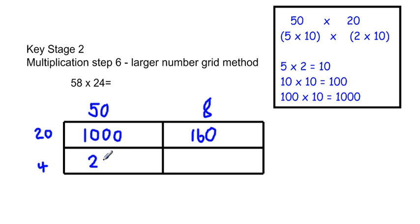Then we do 50 multiplied by 4. 4 times 5 is 20. Multiplied by 10 is 200. 4 times 8 is 32. This method relies upon the children being able to multiply by 10.